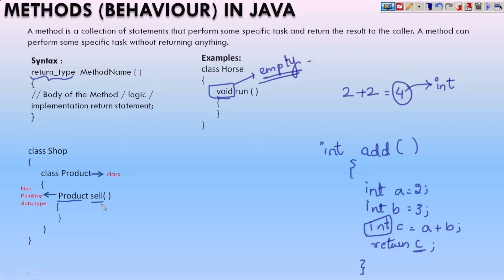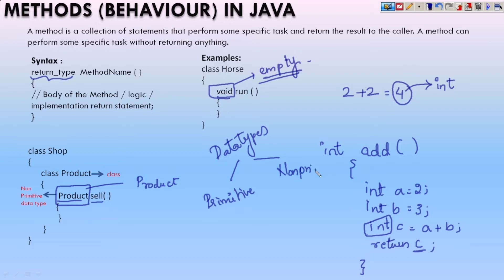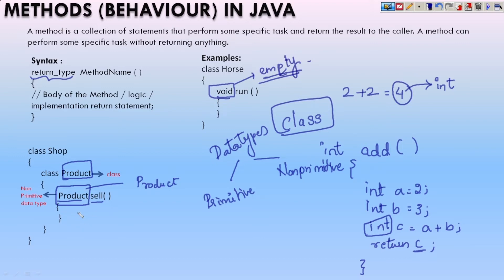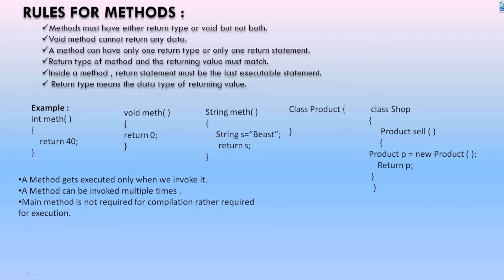One more example: class Shop, class Product. Inside this class you have a method called 'sell'. Beside the method name 'sell' you have the class name Product. If we see our previous videos, where we had data types, we had seen two types: primitive data type and non-primitive data type, also called user-defined data types. In the non-primitive data types, a class was also one of the data types. So class Product can also act as a non-primitive data type and can be the return type of the 'sell' method — because what you're going to sell from the shop is a product.